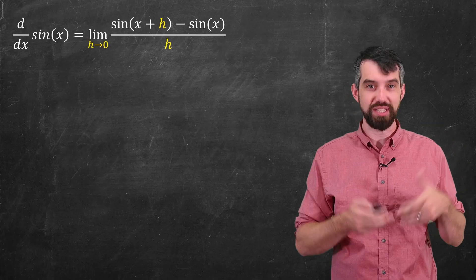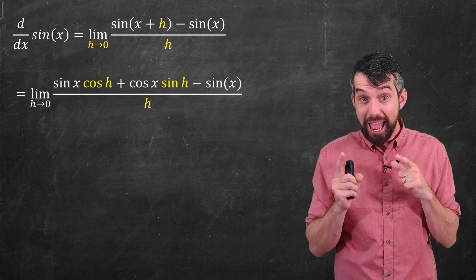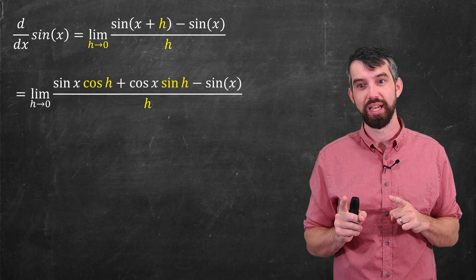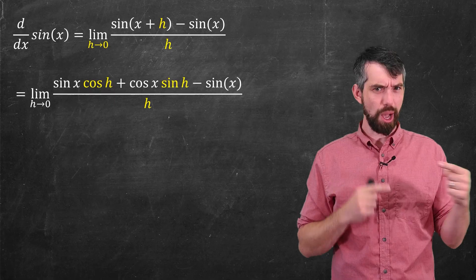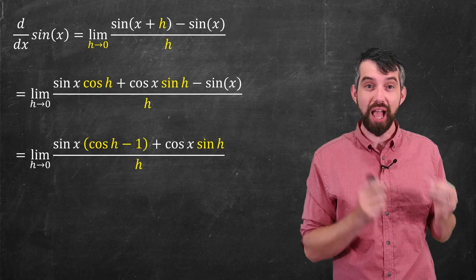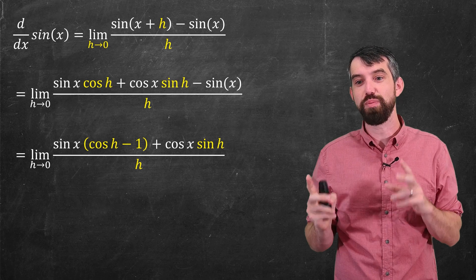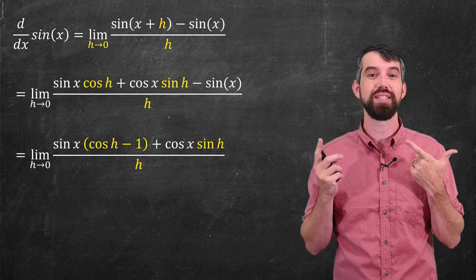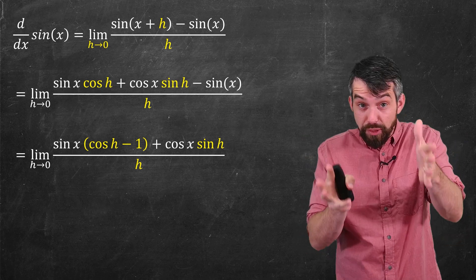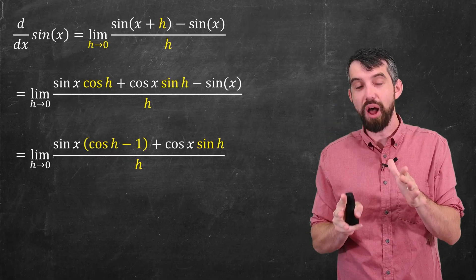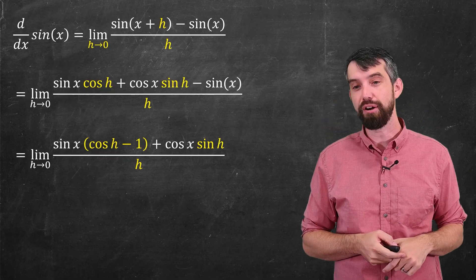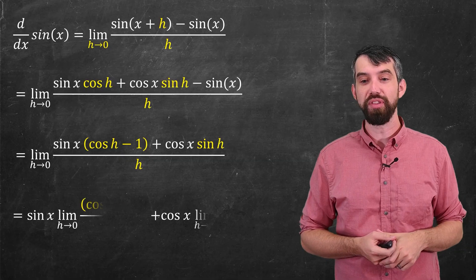Sine of x plus h, well, this is an addition formula, so I can expand that out using some trigonometric rules. I then notice that there's a couple terms with sine of x, so I can put those together as sine of x times cosine of h minus 1 plus cos of x sine of h all divided by h. I'm stepping through this algebra quickly because it's not the point, but you can pause and think through it carefully.